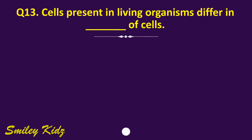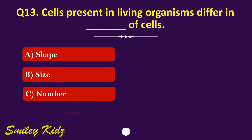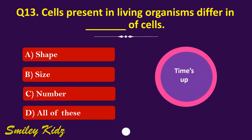Question number 13. Cells present in living organisms differ in dash. The options are: A. Shape, B. Size, C. Number, or D. All of these. Your time starts now. Your time is up and the right answer is option D. All of these. Cells present in living organisms differ in their shape, size, and number.